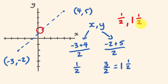What the midpoint formula is basically saying is: you get the two x values and you add them together, divide by 2, and then you get the two y values, add them together, divide by 2, and you get your x, y midpoint value. So that's really all there is to it.